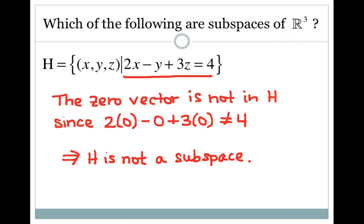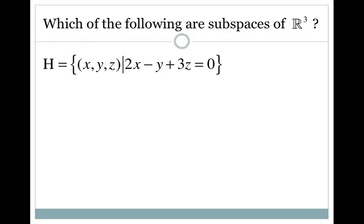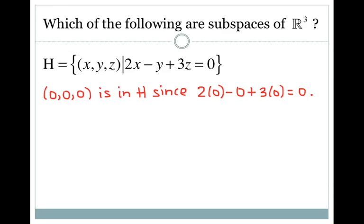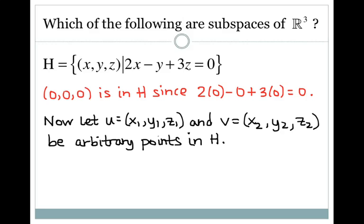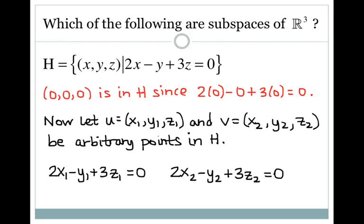Second example: H is all the points (x, y, z) meeting the condition 2x minus y plus 3z equals 0. The point (0, 0, 0) is in H since 2(0) minus 0 plus 3(0) equals 0, so the first condition is met. Now I want to check the next two. I'll let u and v be arbitrary points in H, calling u = (x1, y1, z1) and v = (x2, y2, z2). Because they're in H, each meets the condition: 2x1 minus y1 plus 3z1 equals 0, and 2x2 minus y2 plus 3z2 equals 0.